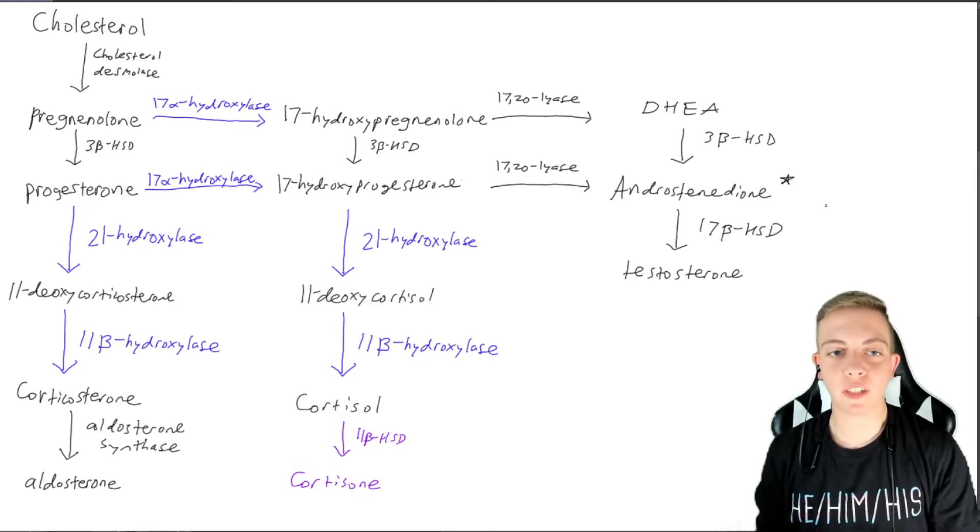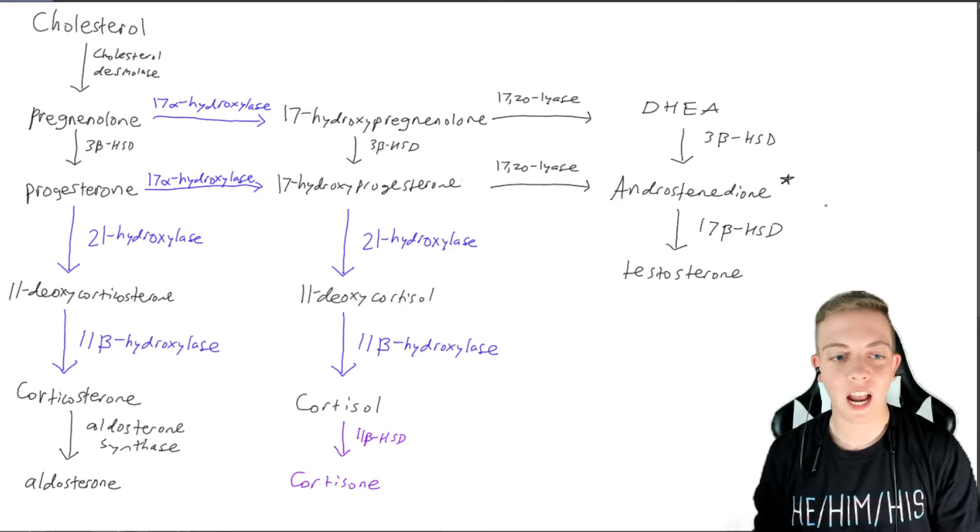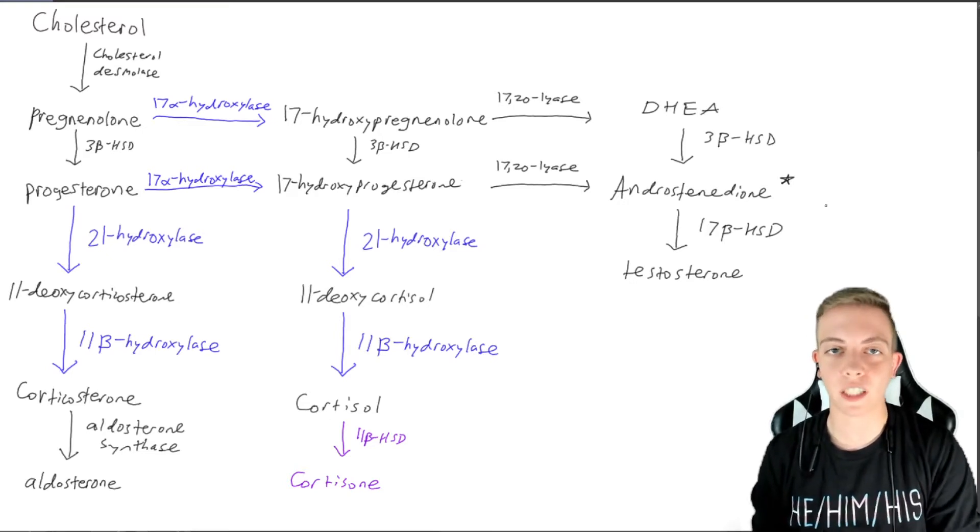The last few videos, we talked about 21 hydroxylase deficiency and 11 beta hydroxylase deficiency, and today we are focusing our attention on 17 alpha hydroxylase, which is a different deficiency than we saw with the last two.